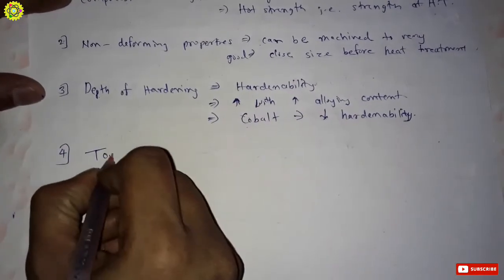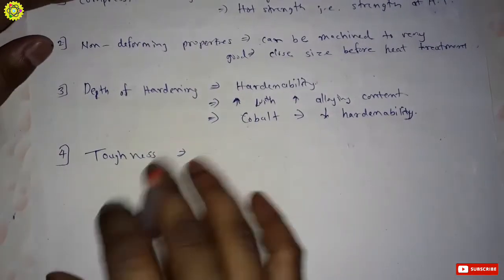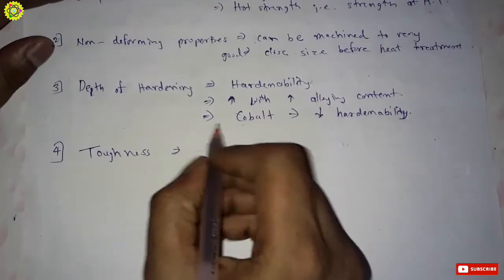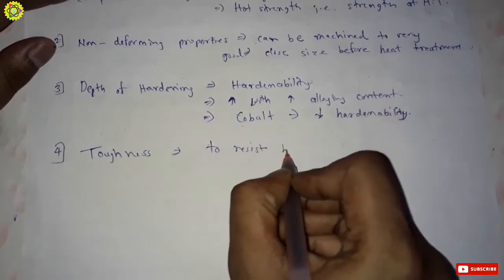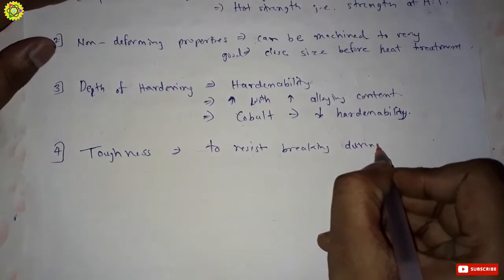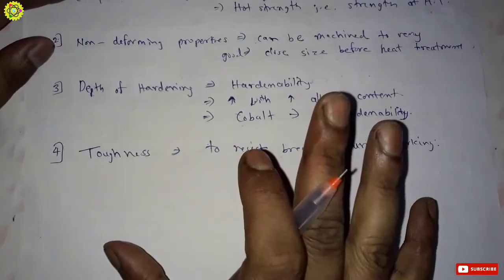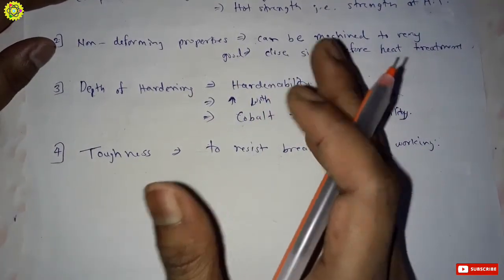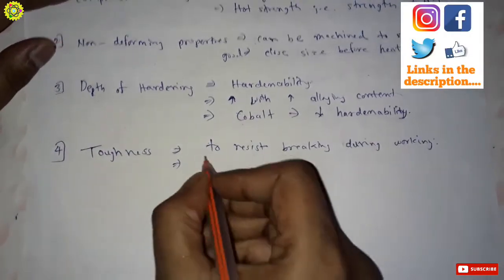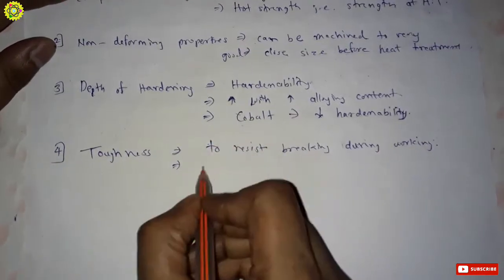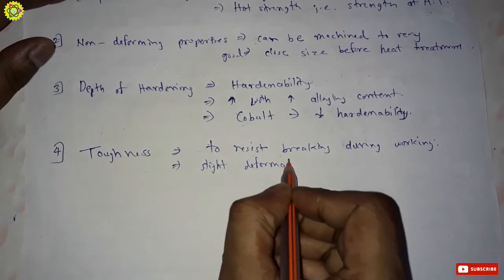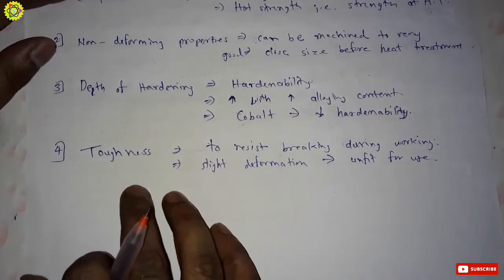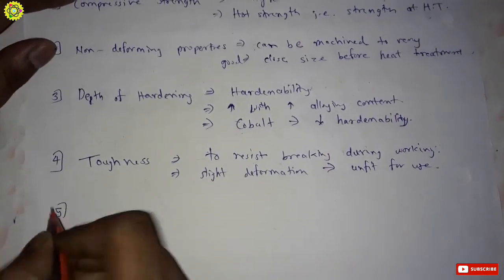The fourth property is toughness. Tools should have great toughness to resist breaking during working. Most tools must be rigid, and usually even slight plastic deformation causes the tool to become unfit for use. So tool steel should have good toughness.